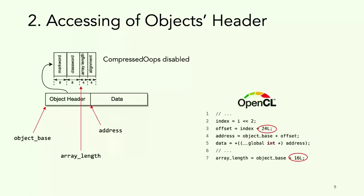Then we have the address, which was adding the offset of 24 bytes and pointing directly to the data. If we wanted to access array length, because in Java we have array dot length, we could retrieve it from the object header by adding 16 bytes. However, this functionality doesn't exist in other languages like C++.